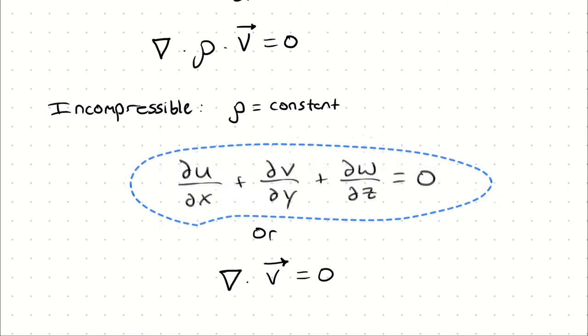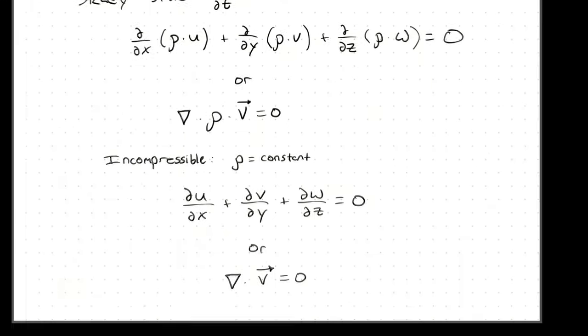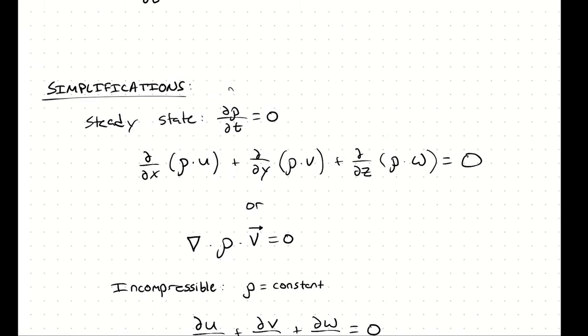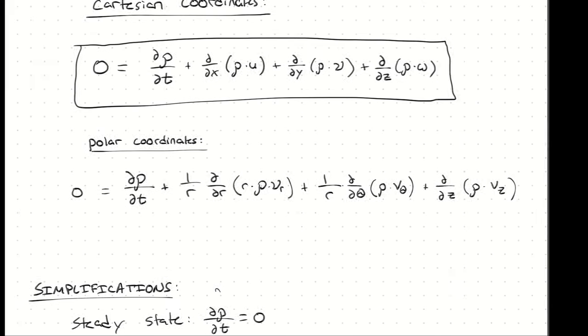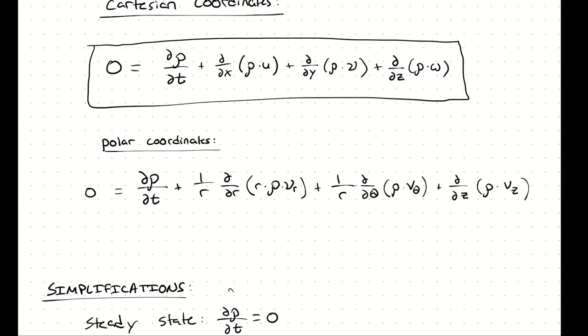We can use that simplification because incompressibility means the density doesn't change. If the density doesn't change, then we don't have to consider the change in density with respect to time, the change in density with respect to x, nor y, nor z.